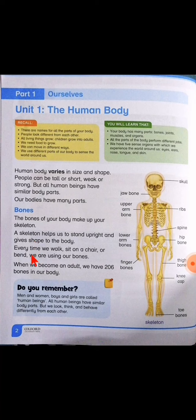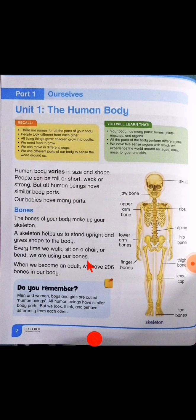Every time we walk, sit on a chair, or bend, we are using our bones. When we become an adult we have two hundred and six bones in our body. بیٹا، آپ کو پتہ ہے ہماری body میں ہماری bones کی وجہ سے ہم walk کرتے ہیں، ہم chair پہ بیٹھ سکتے ہیں، ہم چیزوں کو lift کر سکتے ہیں۔ اور ایک important بات — جب ہم بڑے ہو جاتے ہیں ہماری total bones 206 ہوتی ہیں۔ Always remember: we have 206 bones in our body.